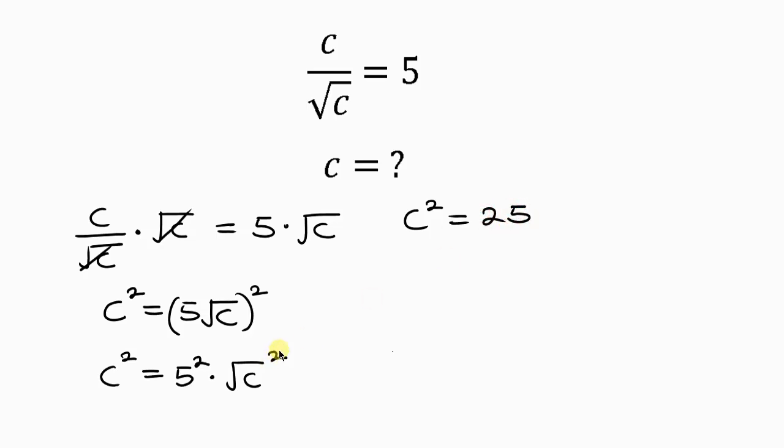And then this square cancels out the square root, leaving behind C. Now let's move 25C to the left-hand side. When we do that, we have C squared. And as 25C crosses to the left, it becomes minus 25C. And this is equal to 0.